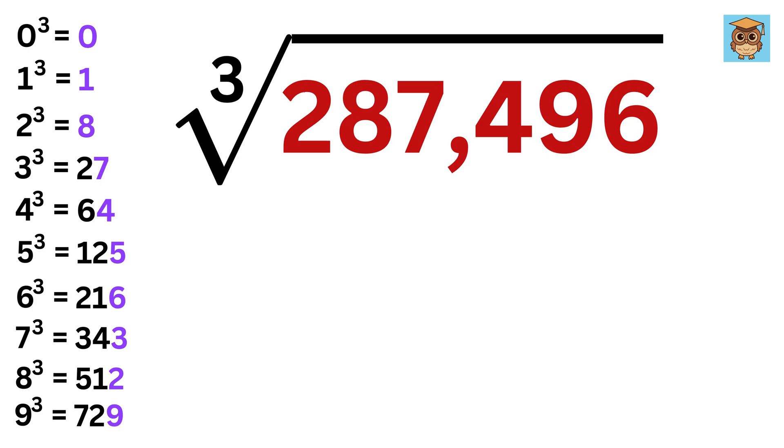Let us finally do it for this value. Last digit is 6, so write 6 here. Then cancel 3 digits. Now 216 is just less than 287. So write 6 here, and we are done. The answer is 66.